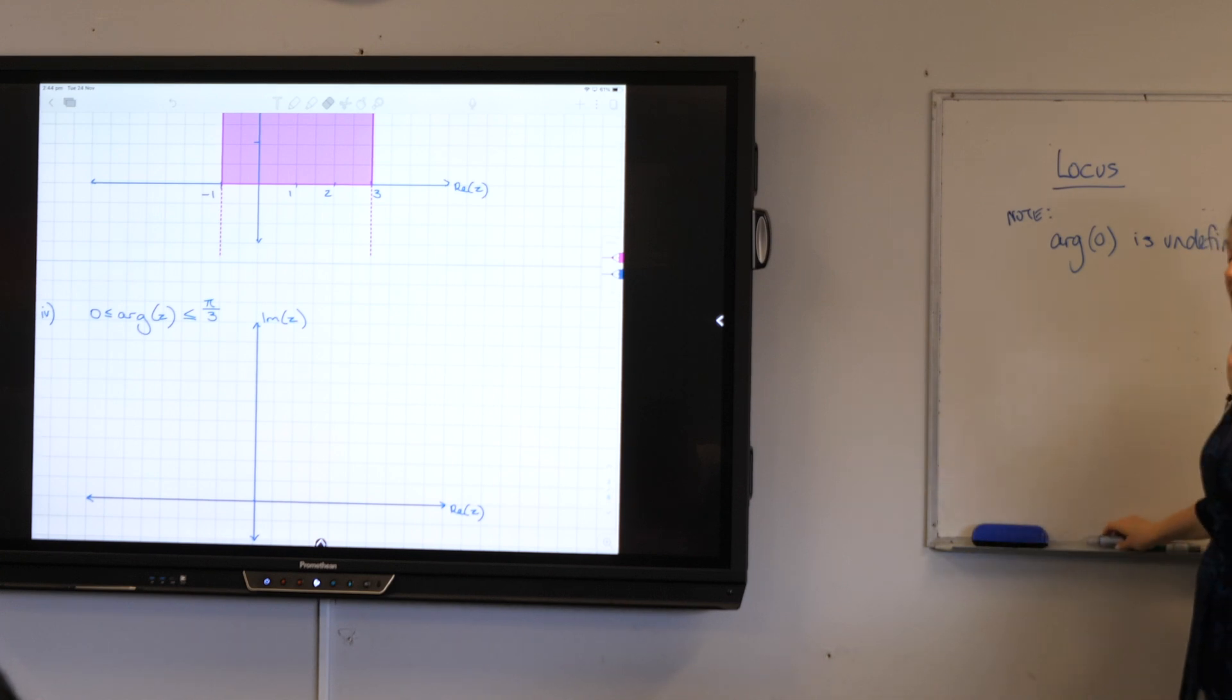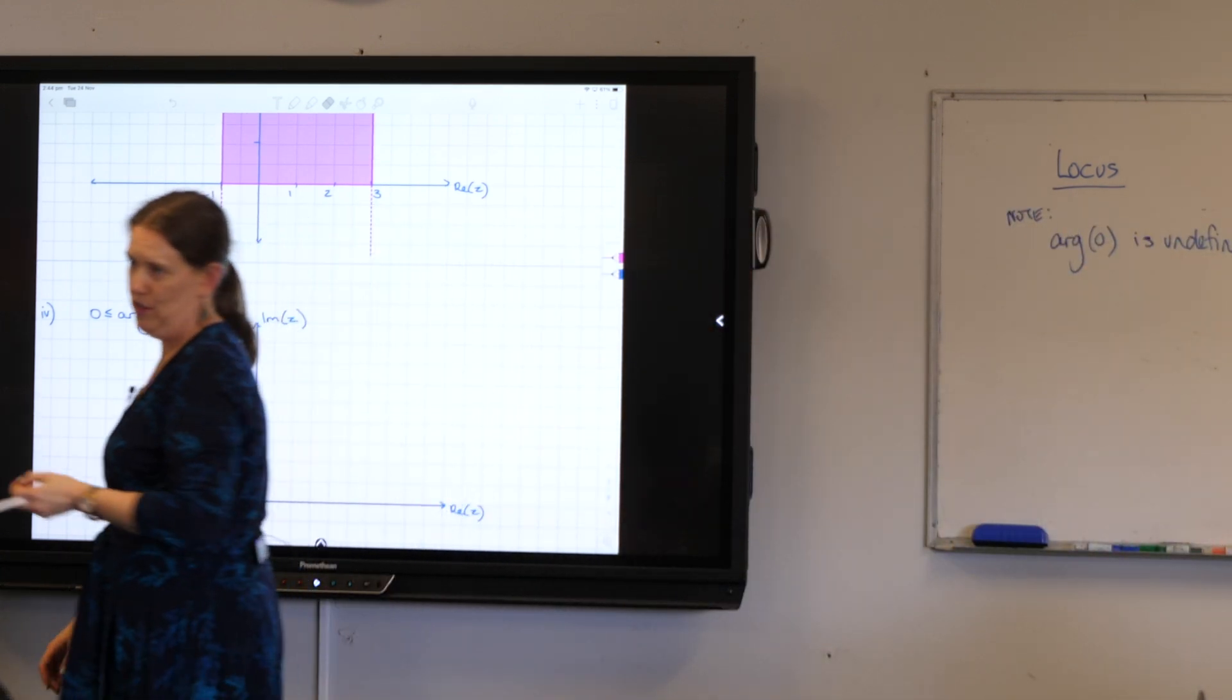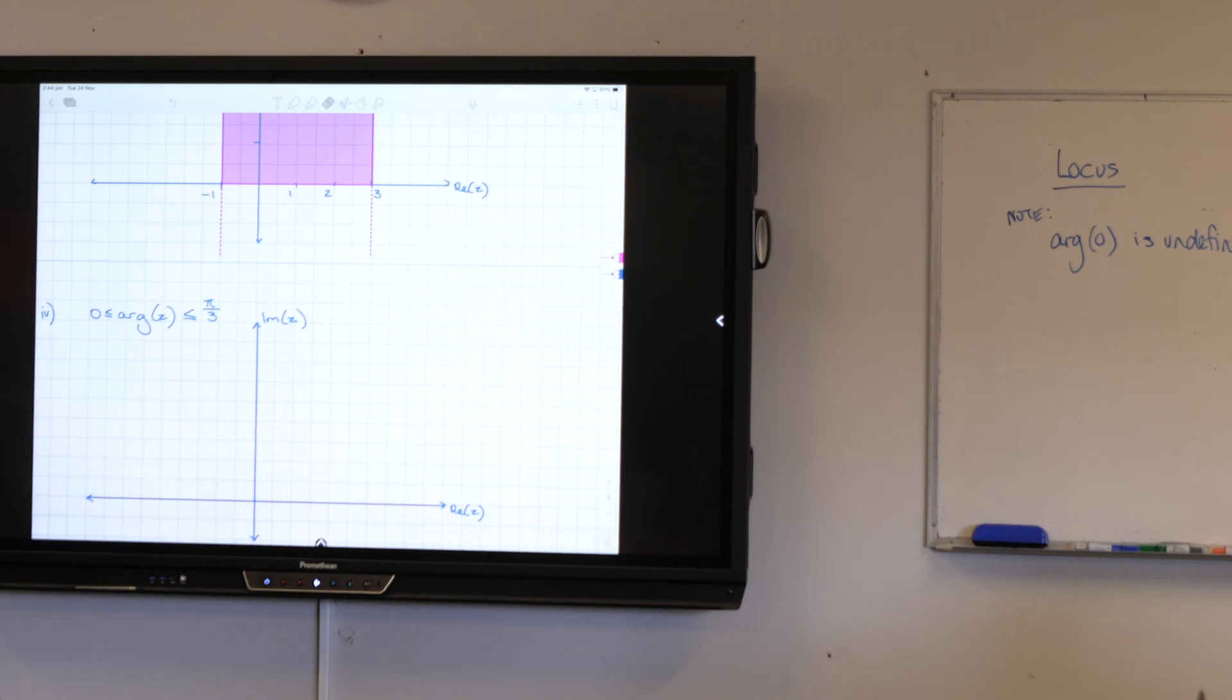It is undefined. Somewhere on this diagram you need to write a note, and you need to say arg zero is undefined. That means at zero you must draw an empty circle. So when you're drawing this up, the origin we need an empty circle and an obviously empty circle. You can then draw up your line, you can then show me your angle because you need to show me detail, and you can then go and color it in.